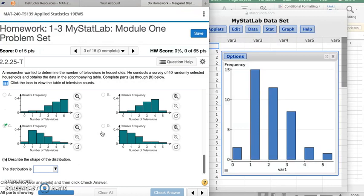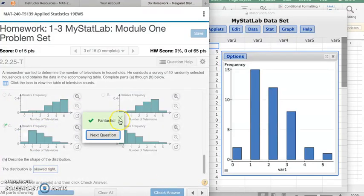Describe the shape of the distribution. Now, without looking at the mean or the median, I can tell you this tail over here on the right side, that means it's right skewed. So let's look skewed right, because that tail is on the right side and the bulk of the data is on the left. Check answer. Fantastic. That's how you do number three. If you have any questions, let me know. Thank you.